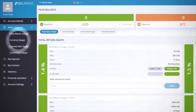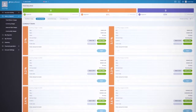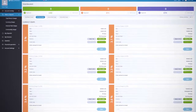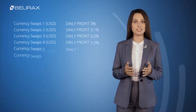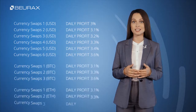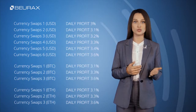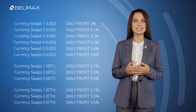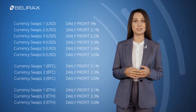Currency Swaps is a category of investment plans that provides clients with an increased interest rate on deposits. Accrual and payment of profit on active deposits is also carried out daily. The initial deposit amount is not refunded at the end of the investment period, as it is included in the amount of daily accruals. The daily profit ranges from 3% to 3.6 percent depending on the investment plan you choose. The interest rate is fixed and does not change until the end of the investment period.